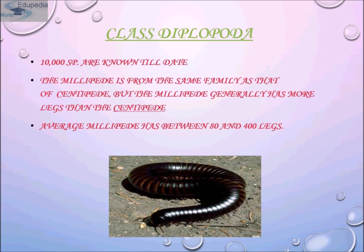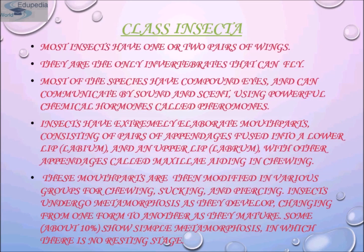Class Insecta: most insects have one or two pairs of wings and are the only invertebrates that can fly. Most species have compound eyes and can communicate by sound and scent using powerful chemical hormones called pheromones. Insects have elaborate mouthparts consisting of pairs of appendages fused into a lower lip called the labium and an upper lip called the labrum, with other appendages called maxillae which aid in chewing.